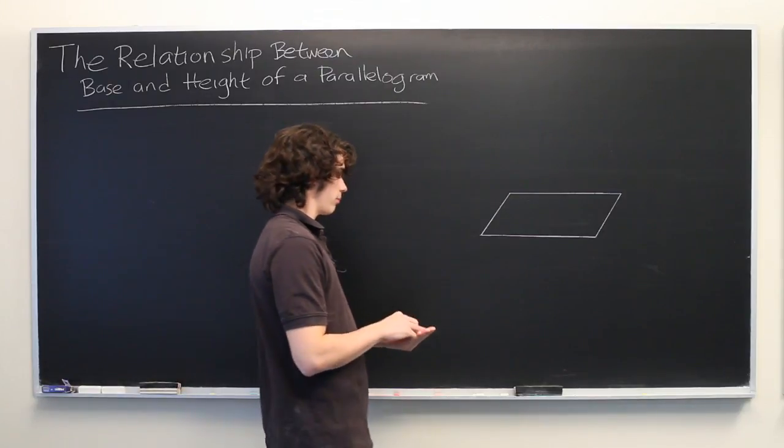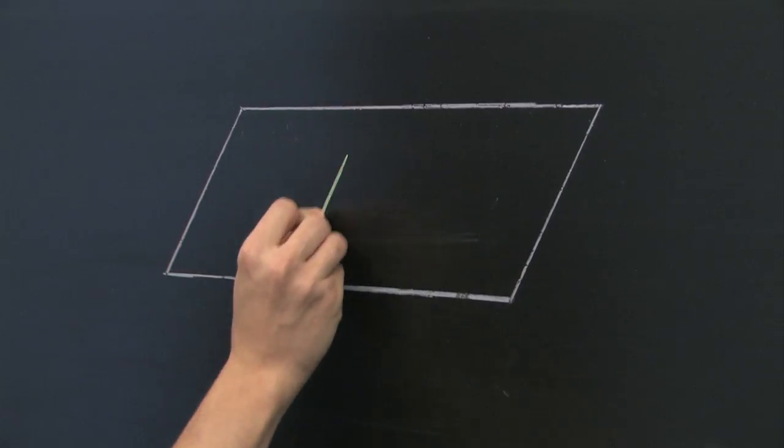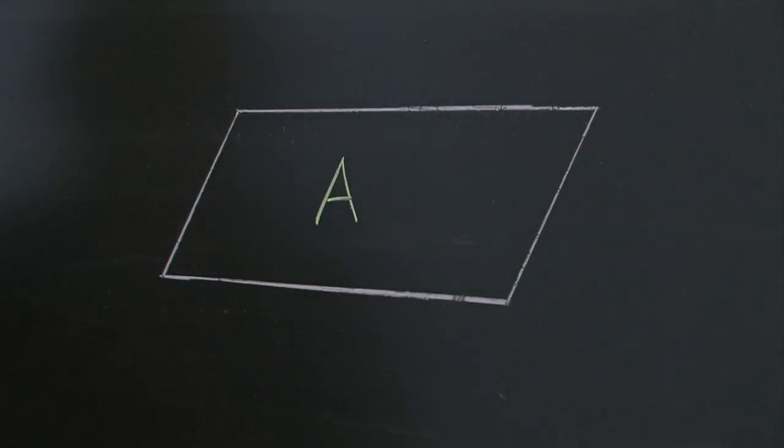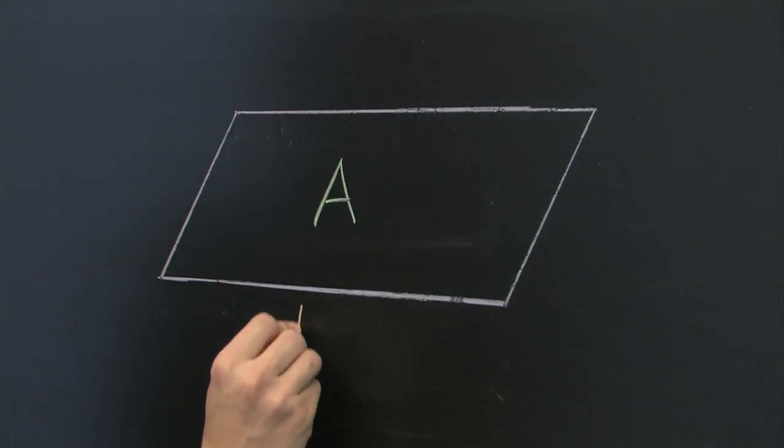So here we have a parallelogram. Let's say that we know that the area is some value A. We'll say that the base has some length B.